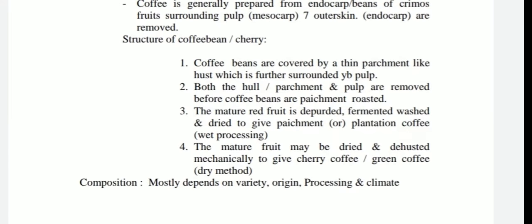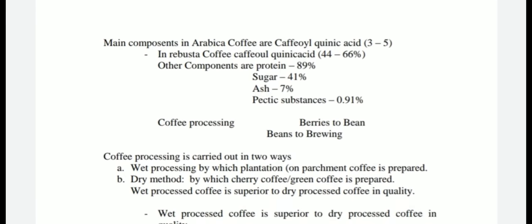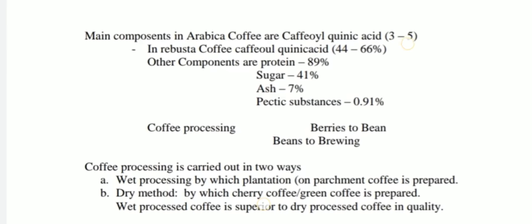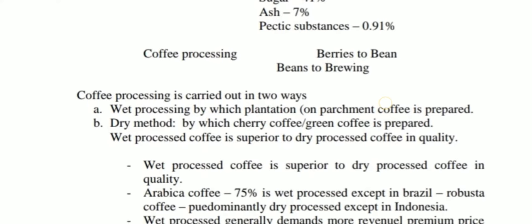Coffee beans are covered by all these parts as we have seen. Now the composition — you can see the antioxidant properties; chlorogenic acid and other components are also present.